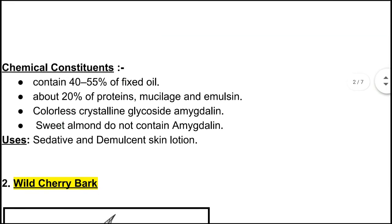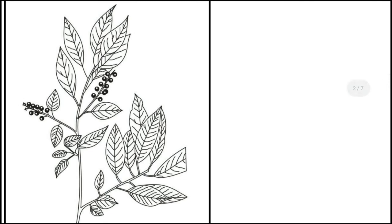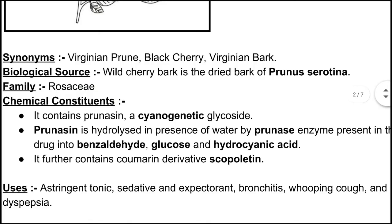Next is wild cherry bark. The synonyms are: Virginian prune, black cherry, and Virginian bark. Biologically, wild cherry bark is the dried bark of Prunus serotina. The family is Rosaceae.